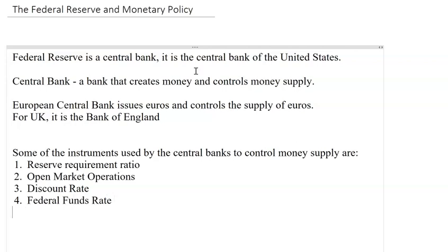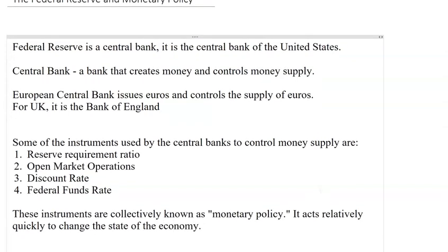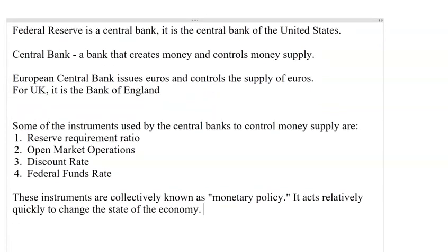We also have the discount rate, which is the interest rate at which central banks loan money to other banks, and the federal funds rate, which is the rate at which banks lend money to each other. Collectively, these instruments are known as monetary policy. The other policy is fiscal policy — changing government taxation and expenditure — but monetary policy is favored because it acts relatively quickly. Fiscal policy may take a long time to pass through the legislative body and take effect.